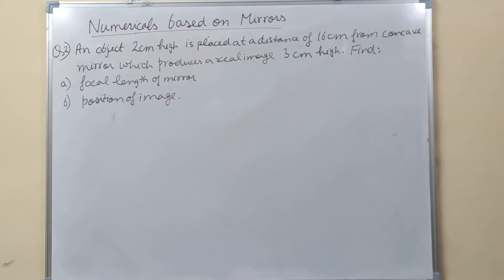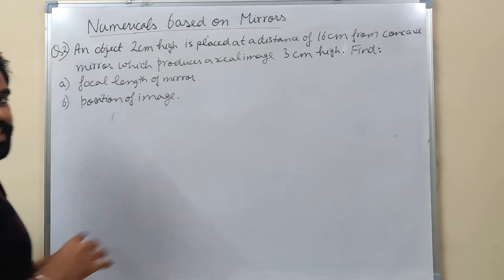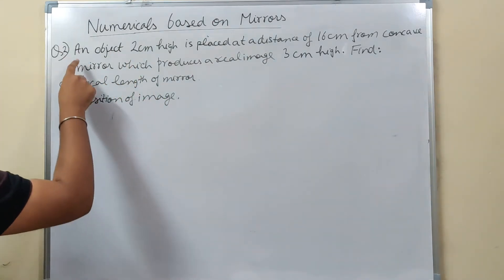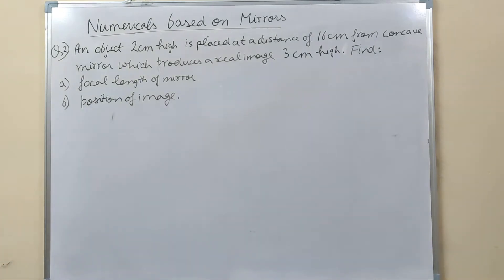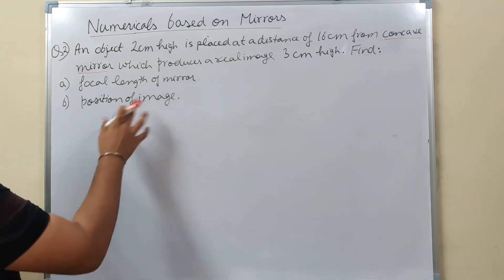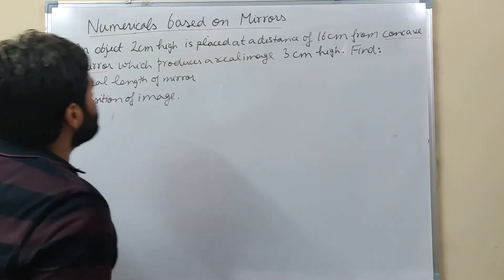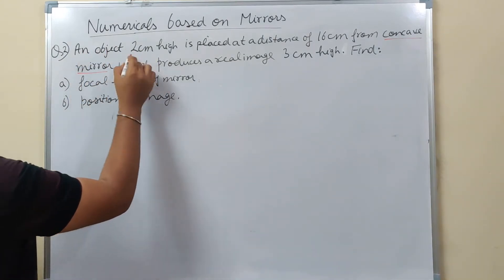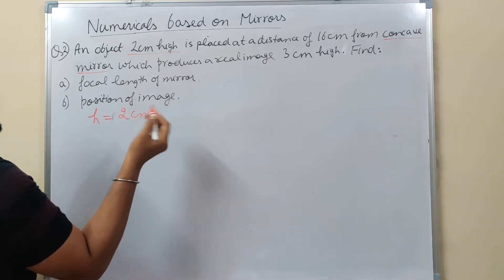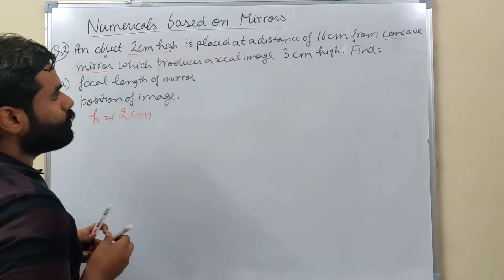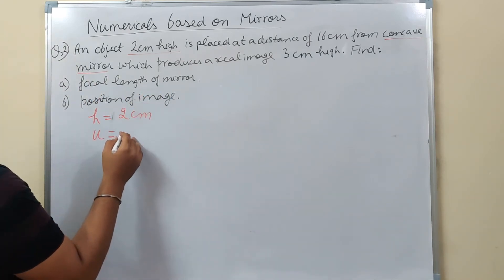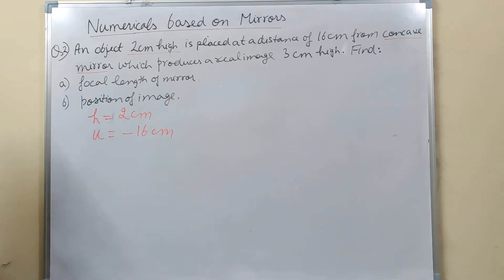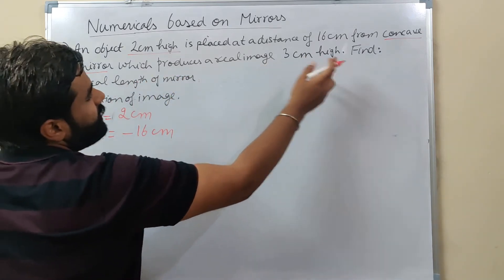Let's look at the next numerical - same type, slightly different formation. Take your notebook and pen and start doing the solution with me. An object 2 cm high is placed at a distance of 16 cm from a concave mirror, which produces a real image 3 cm high. Find the focal length of mirror and position of image.